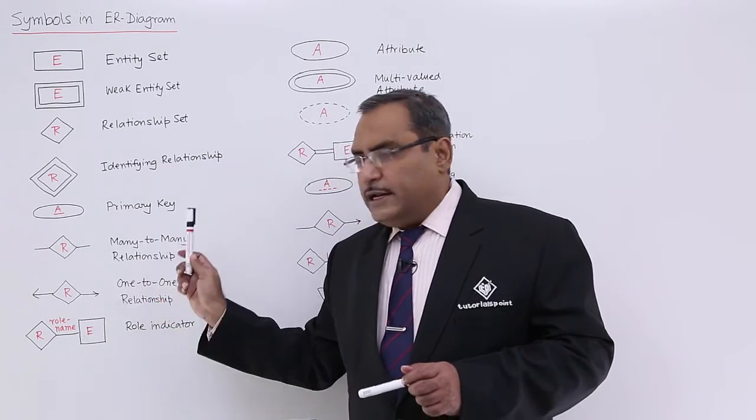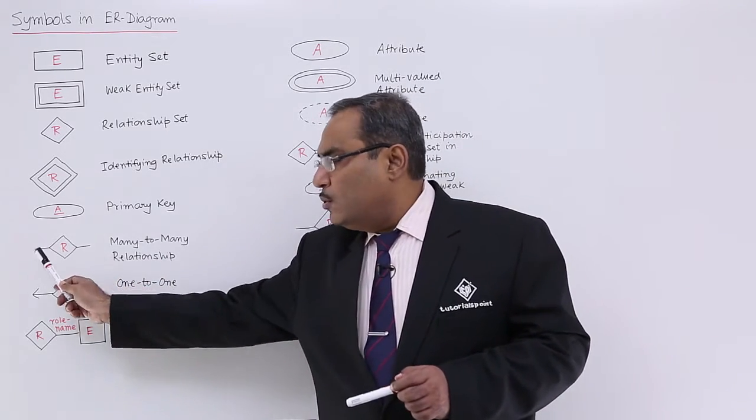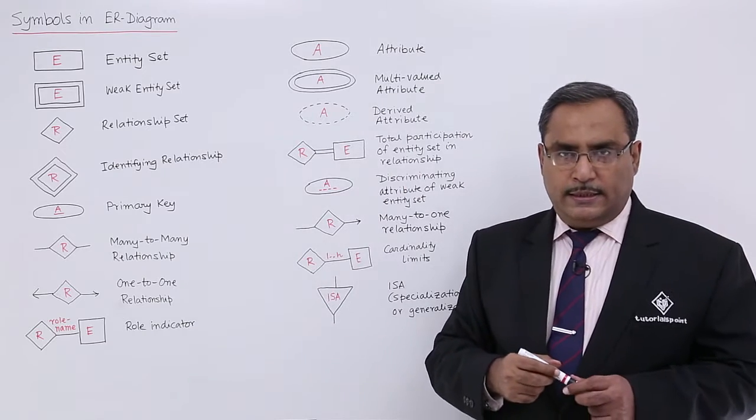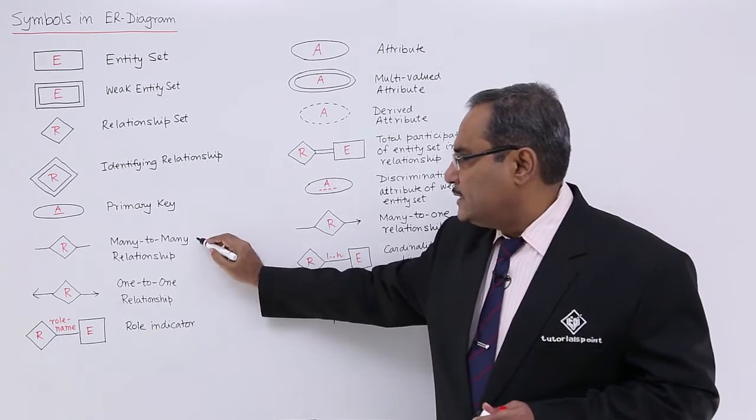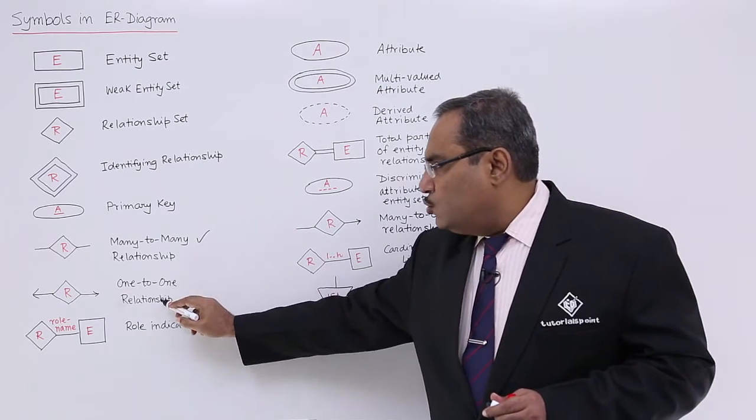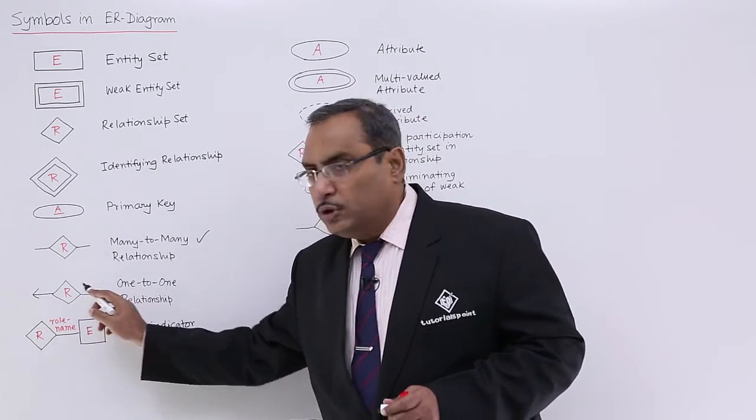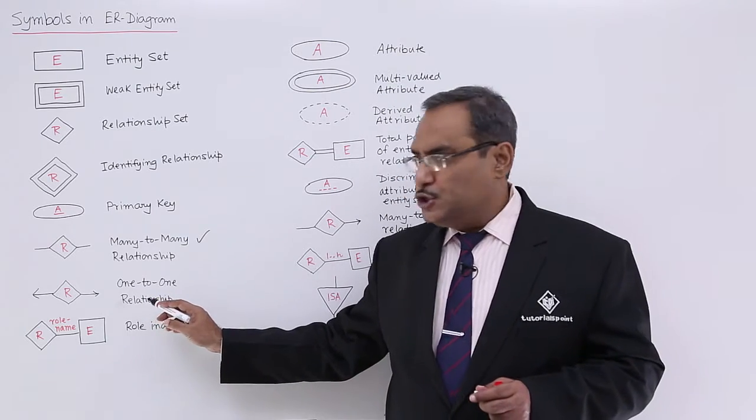In case of many-to-many relationship, there will be no arrows across these edges. In case of one-to-one relationship, there will be arrows on both directions as shown.